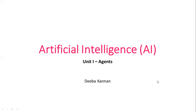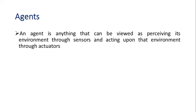Hello everyone. In today's session we are going to discuss about agents in artificial intelligence. So what is an agent? An agent is something that has the capability to perceive what is happening in the environment through sensors. It is able to perceive the environmental situation, and based on the scenario it is able to react. For example, when you take a human being — if there is a fire somewhere, I can see the fire, I can feel the heat.